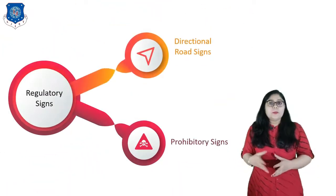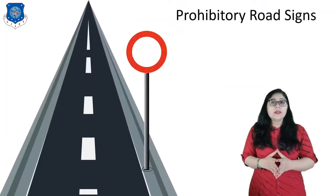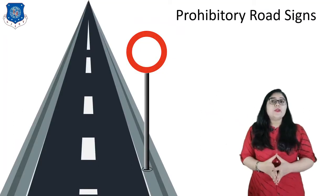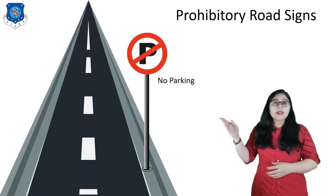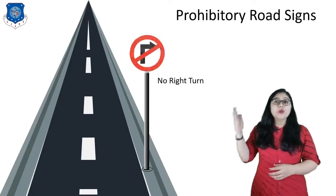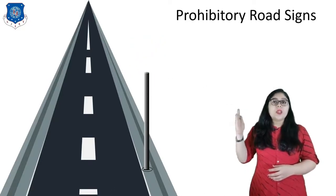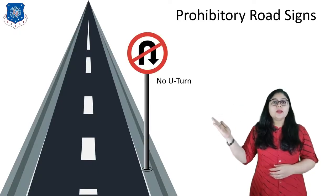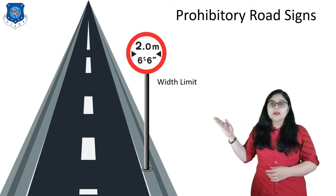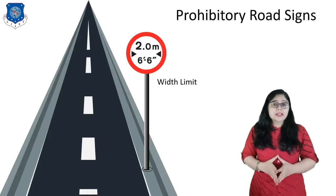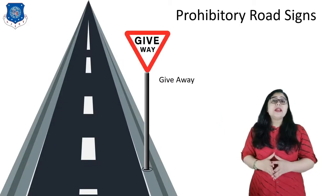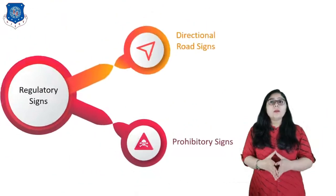Now let us discuss prohibitory signs. They have a white background, red border and black symbols. Different types of prohibitory signs include no parking, no entry, no left turn, no right turn, no overtaking, no stopping, no U-turn, no horn, speed limit and width limit. There are also a few special cases like stop sign and give way, which have their unique symbols. That's all about regulatory signs.